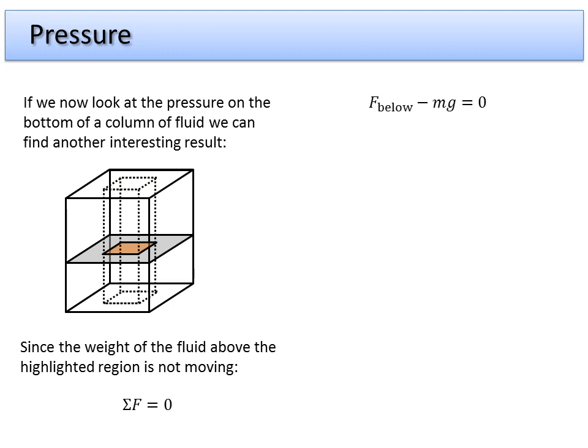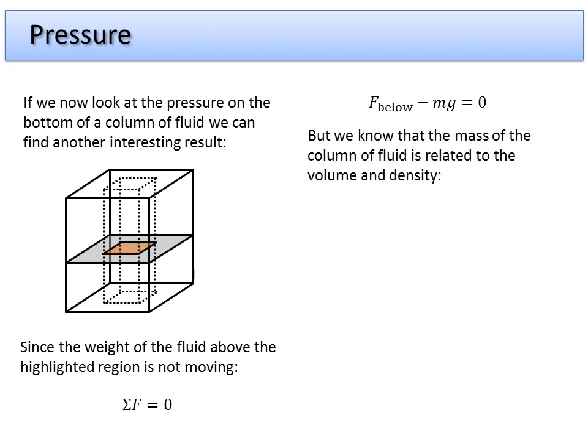We also know that the net force on this has to be equal to zero. So if we look at the weight force of this column of fluid up here it has to be equal to an upward force from this little postage stamp size area. But we know how to calculate the mass of an object so we don't know necessarily what the mass of this fluid is but we know that it has a density.